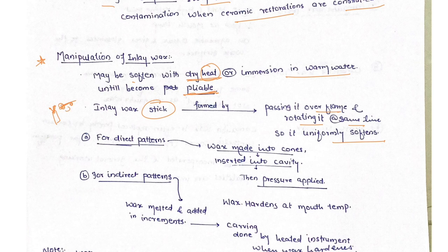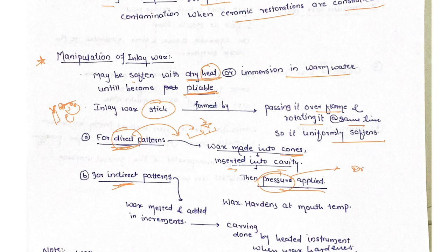For a direct pattern, wax is made into cones, inserted into the cavity, and pressure is applied directly on the patient's cavity. The cavity is filled with wax in cone form, pressed from the top so it adapts into the entire cavity. Pressure can be applied by the dentist or the patient.